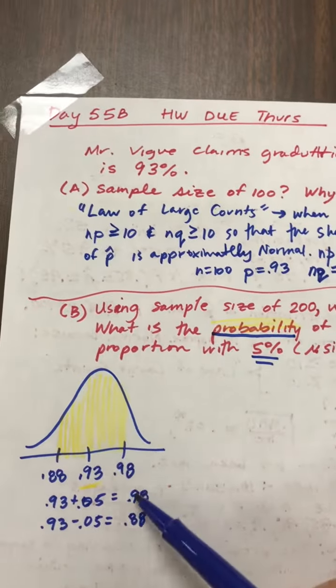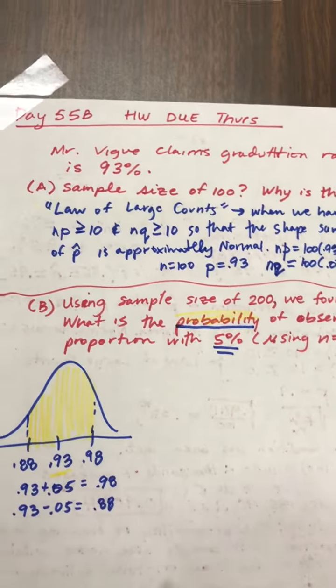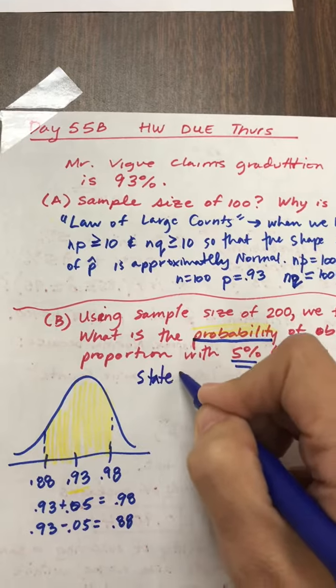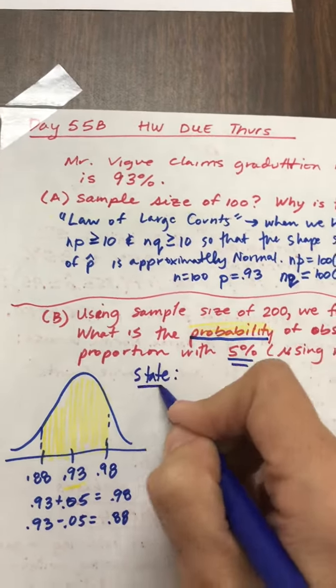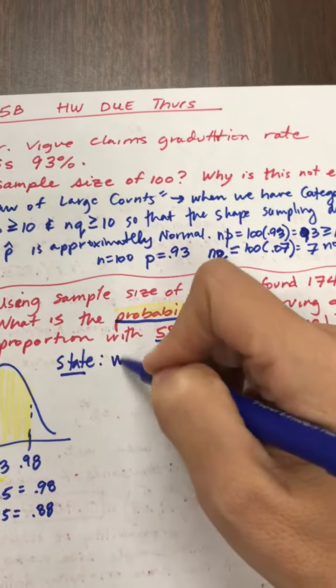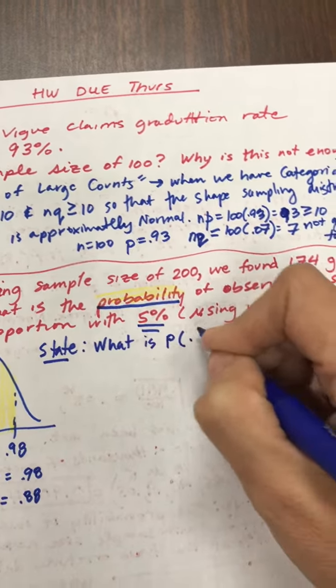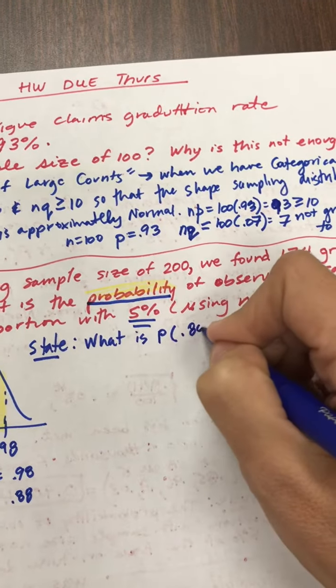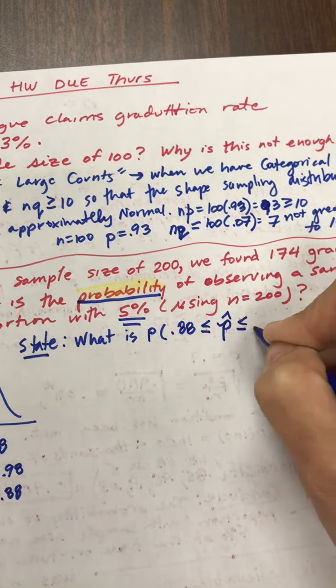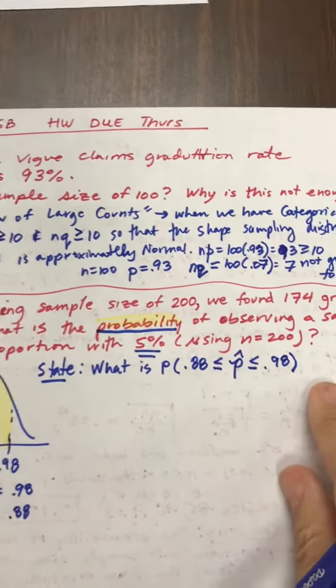So they'd asked us to find the probability of observing a proportion in our sampling data that falls within 5% of the mean. Okay, so I think we can do that, and we can find the area of the curve as long as this is normal, so let's go ahead and state, plan, do, conclude. So state, I'm just going to restate the question. And I'm going to do it like he did. What is the probability that it falls within 5%, so that's between 0.88, the probability of the sample to fall between 0.88 and 0.98? And this is basically saying what my picture is saying.